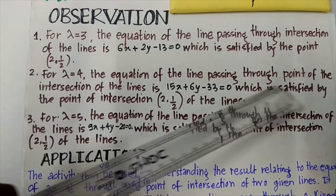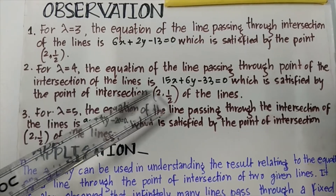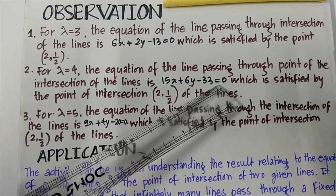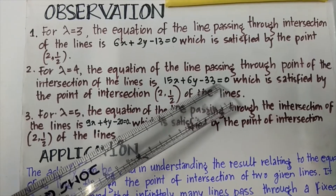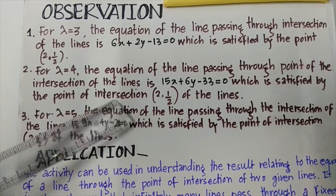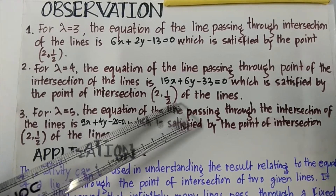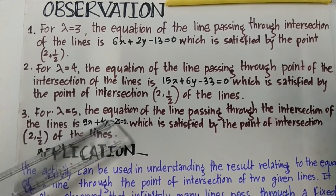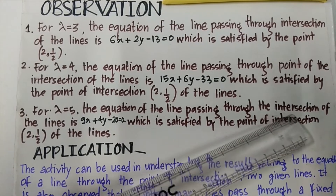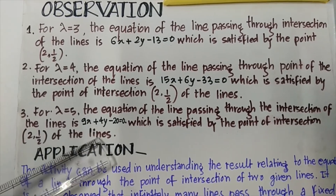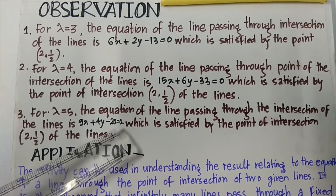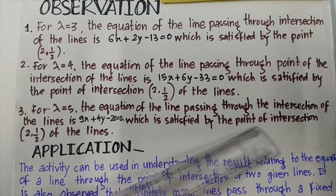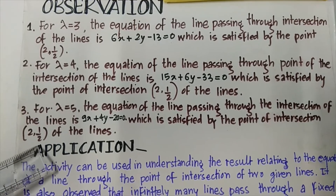On taking the value of lambda equals to 5, the equation of the line passing through the intersection of the lines is 15x plus 6y minus 33 equals to 0. On solving, this also satisfies the point of intersection (2, 1/2). Taking another value of lambda, the equation 9x plus 4y minus 20 equals to 0 is also satisfied by the point of intersection (2, 1/2).